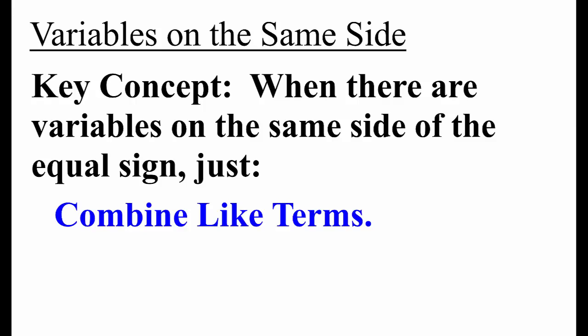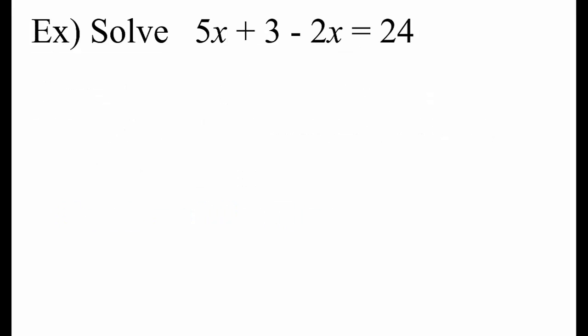Here's a key concept that will help us solve equations with variables on the same side: when there are variables on the same side of the equal sign, just combine like terms. Let's solve 5x plus 3 minus 2x equals 24. We notice there are like terms on the left side of the equal sign, so we start by combining them. 5x plus negative 2x equals 3x. Notice we're not doing inverse operations there.